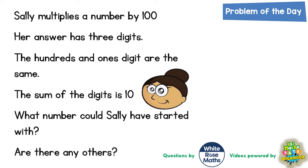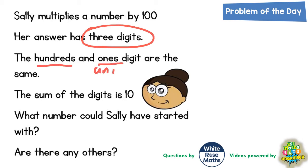It says Sally multiplies the number by 100. The answer has three digits. The hundreds and the ones digit — ones digit is another word for the units digit — are the same. The sum of the digits is 10. What number could Sally have started with? And are there any others?